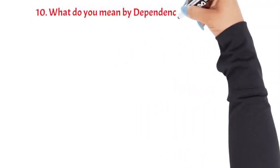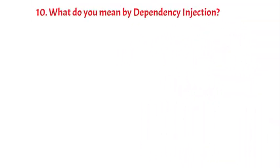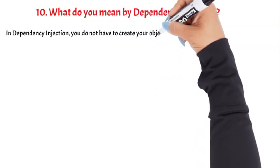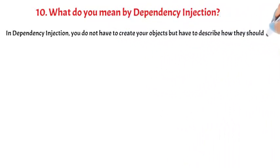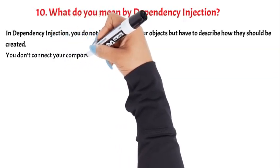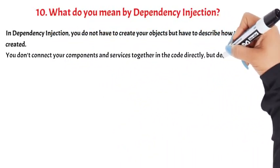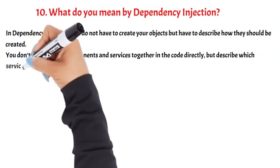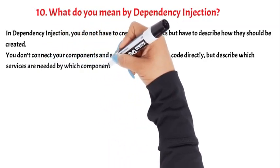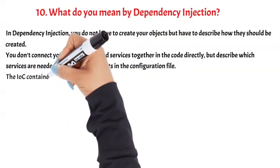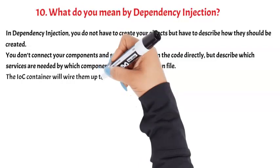Question 10: What do you mean by dependency injection? In dependency injection, you do not have to create your objects but have to describe how they should be created. You do not connect your components and services together in the code directly, but describe which services are needed by which components in the configuration file. The IOC Container will wire them up together.